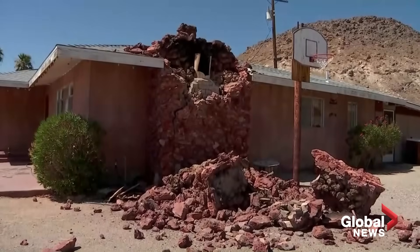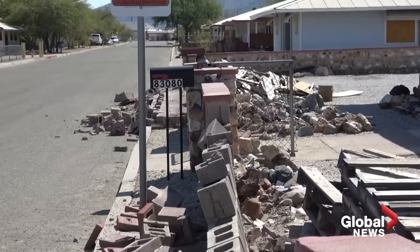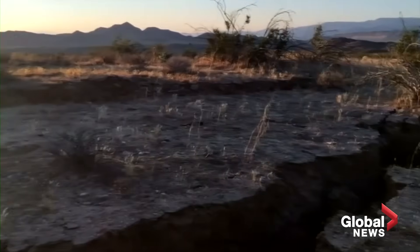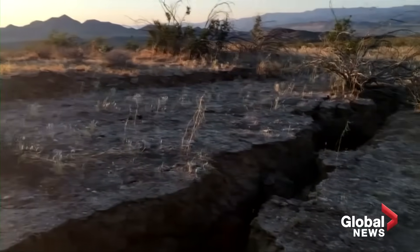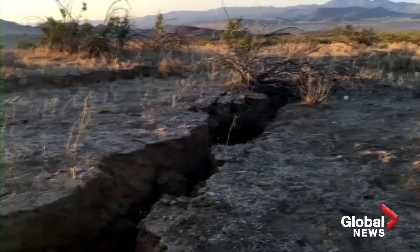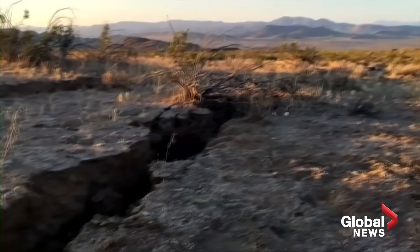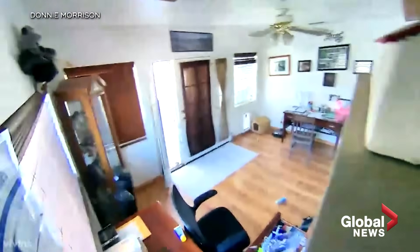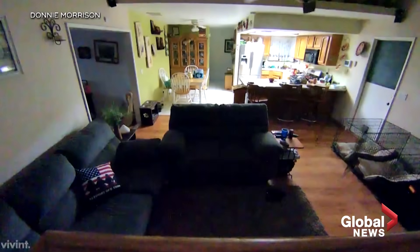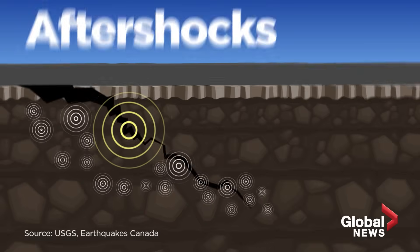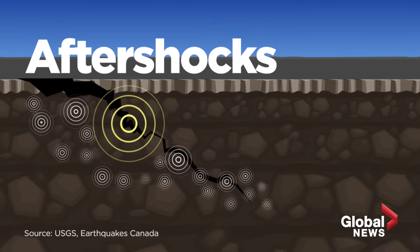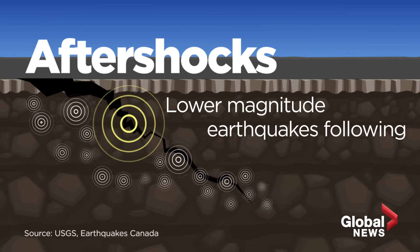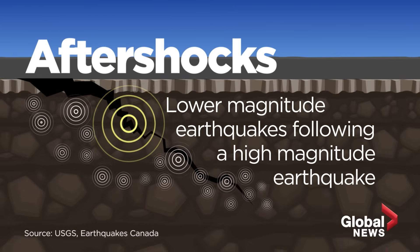This is usually the aftermath above ground. Meanwhile, underground, the Earth's crust is readjusting itself from the main quake, causing seismic shaking again and again and again. Those are called aftershocks — smaller or lower magnitude earthquakes following a larger, high magnitude earthquake.